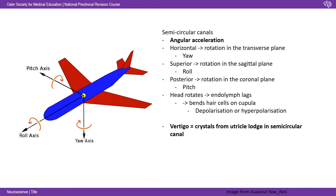As your head rotates, the endolymph lags — the endolymph is the fluid filling the semicircular canals. That bends the hair cells on the cupula, which again causes depolarisation or hyperpolarisation. This becomes important when you look at diseases such as vertigo. Vertigo can be caused by crystals that lie in the otolithic membrane in the utricle and dislodge. Because the utricle connects to the semicircular canals, these crystals can lodge there, making you detect angular acceleration when it's not occurring. The Hallpike test detects it and the Epley manoeuvre can cure it.